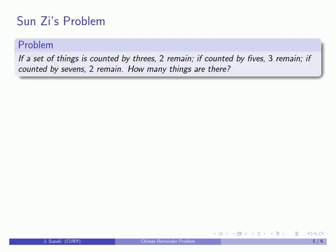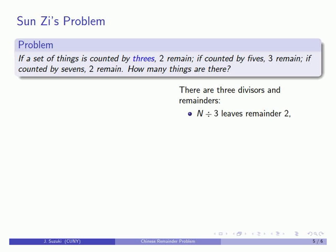Let's take a look at Sun Shi's problem again. There are three divisors and three remainders. If the items are counted by threes, two remain — that is, dividing by three gives a remainder of two. If counted by fives, three remain — dividing by five gives a remainder of three. If counted by sevens, two remain — dividing by seven gives two left over.